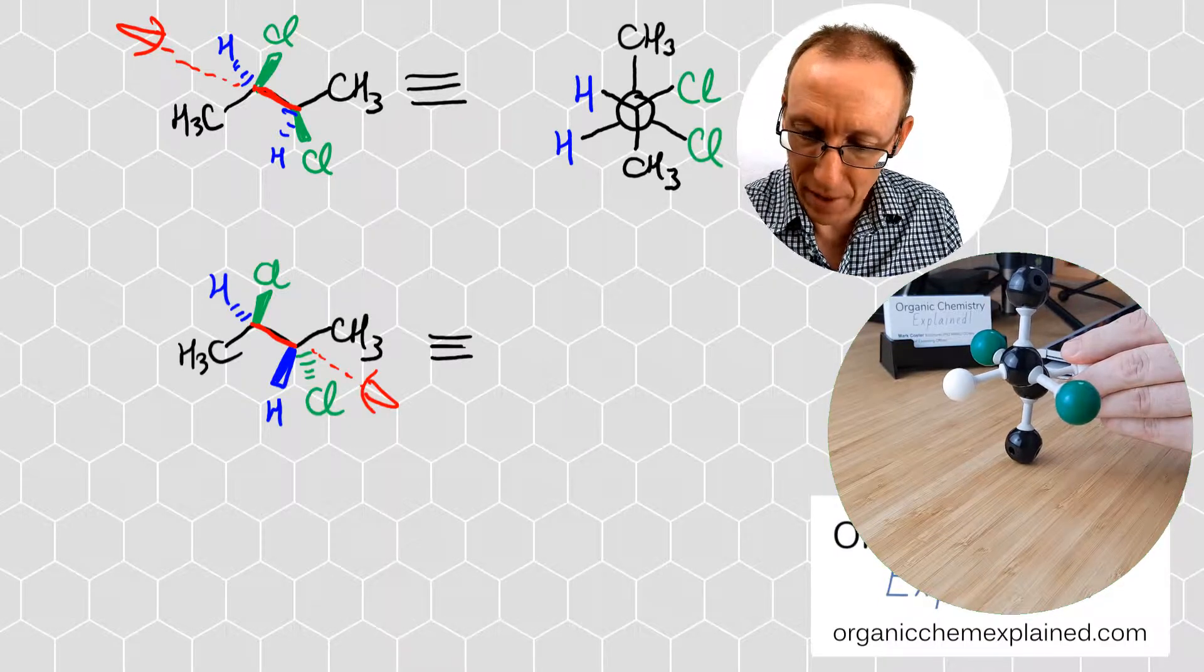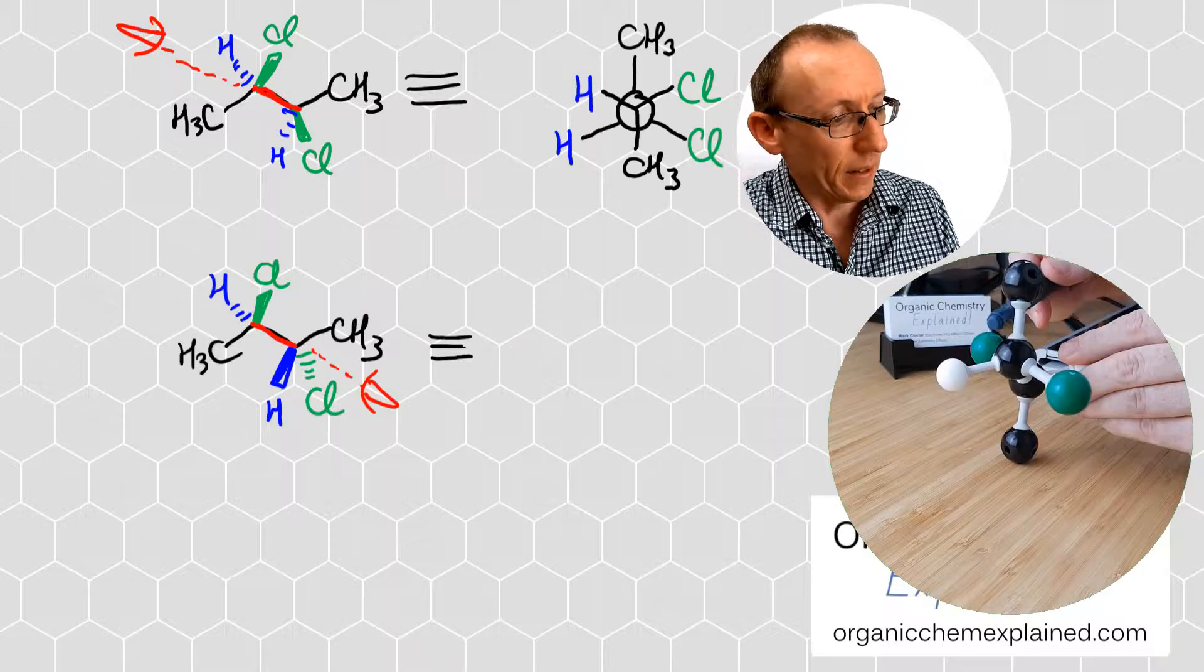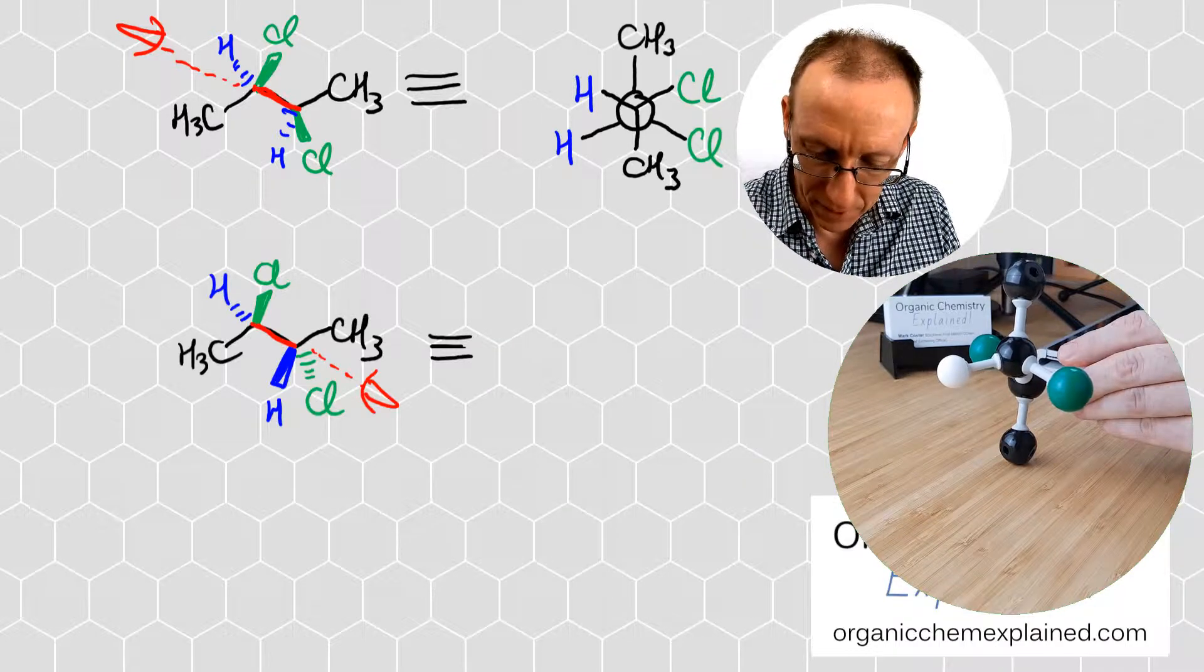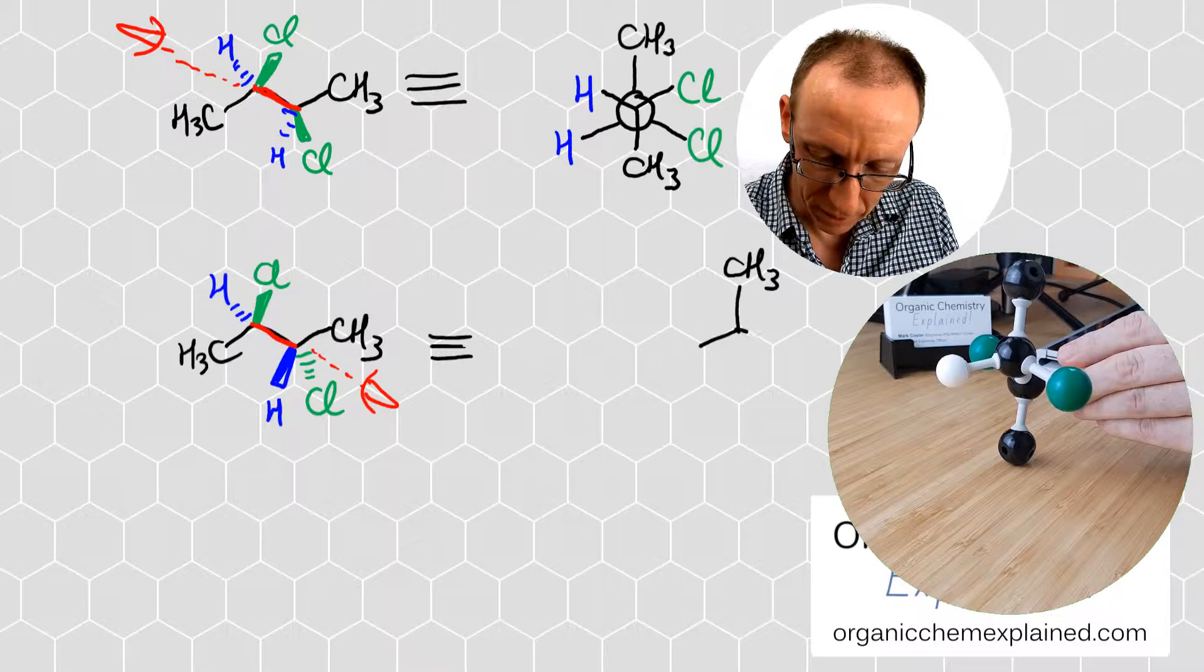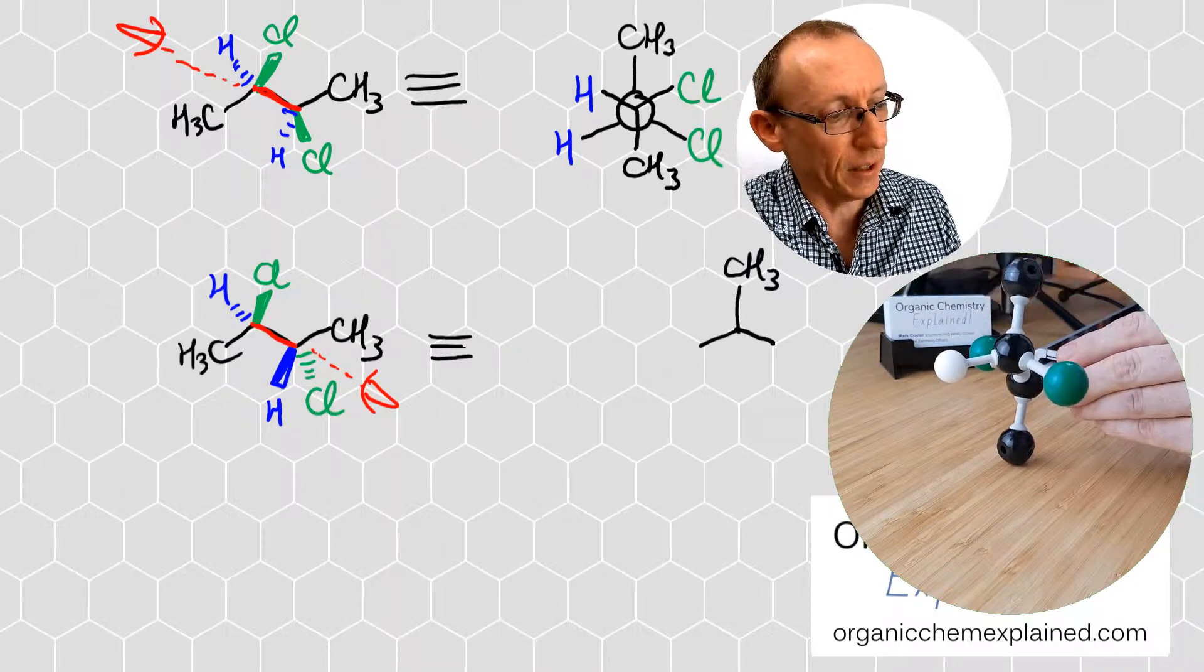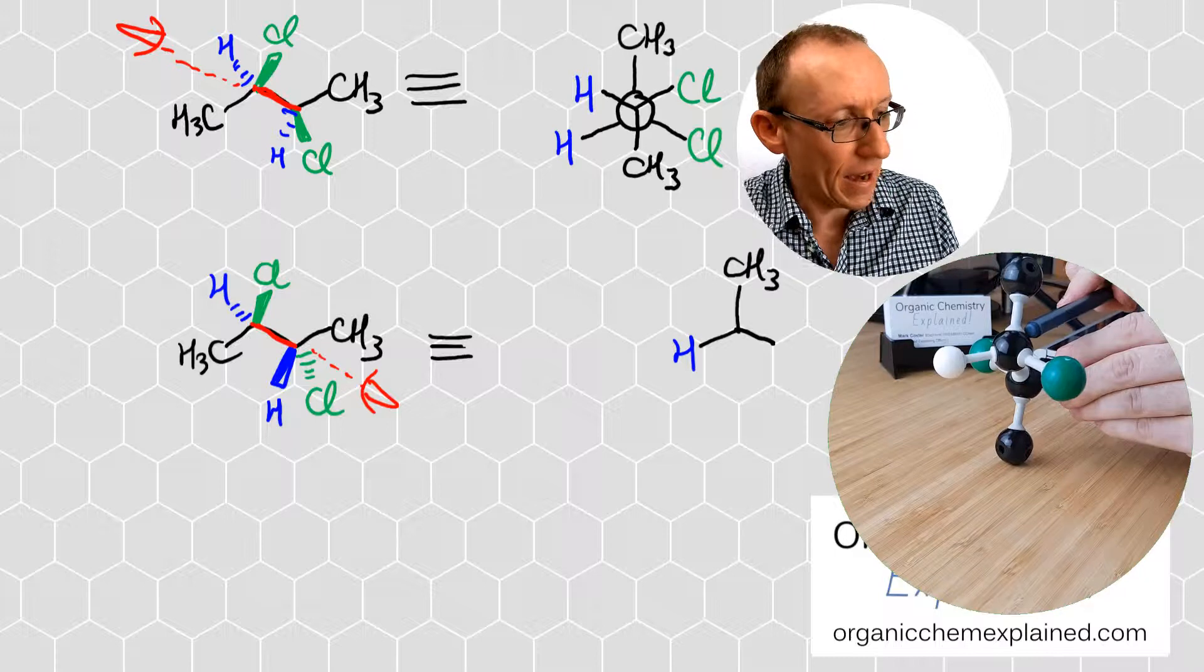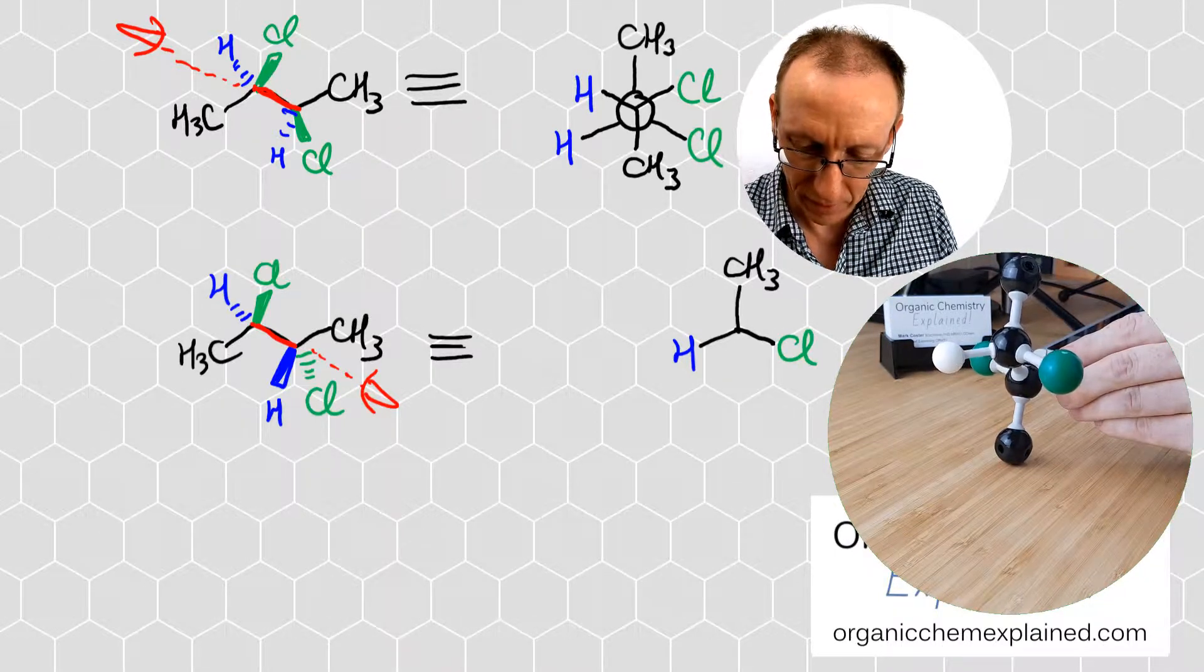If I draw out that as a Newman projection, the front carbon here actually has the methyl group going up. When I draw those three bonds, I'm going to have to start with an up CH3 group and then the other two bonds are going like this. The one that's going down and to the left is to a hydrogen, so down and to the left is like that. And down and to the right is to this chlorine atom here.